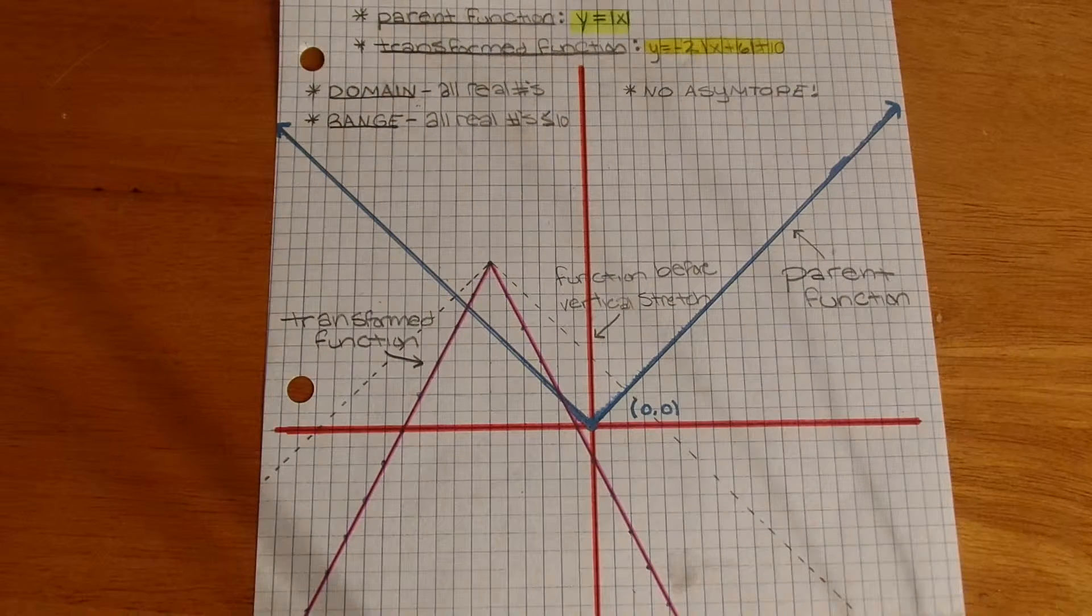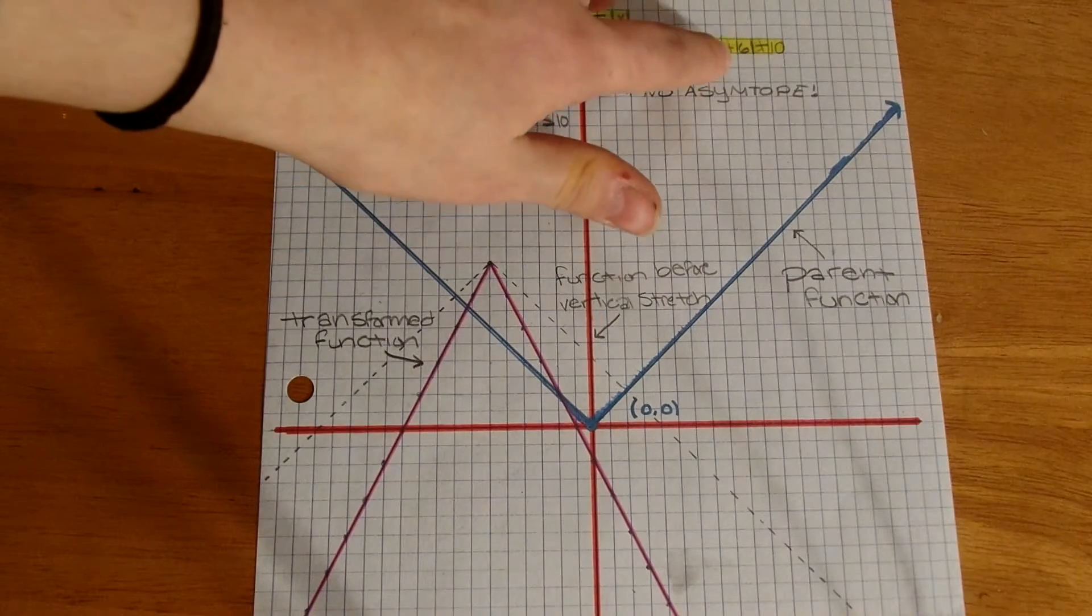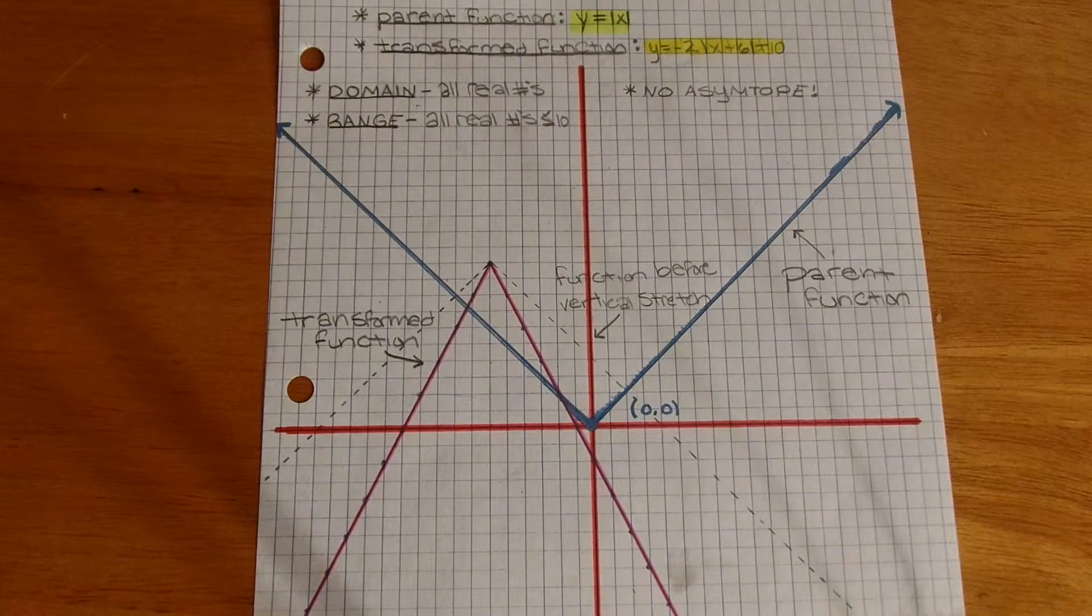To figure out how you're moving your graph, you would look at the number beside the x, so right here, like on the inside of the little lines.